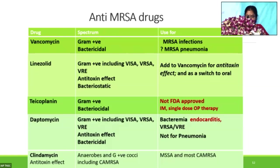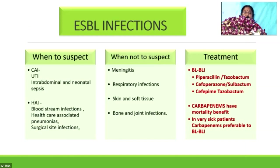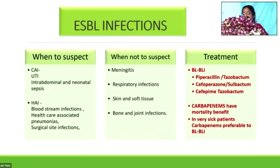ESBL infections are not uncommon — 40% to 50% of UTIs may be ESBL infections. Apart from UTI, intra-abdominal sepsis and neonatal sepsis, ESBL-producing organisms are very common, though we don't think in terms of ESBL in respiratory infections or meningitis. Treatment for ESBL infections includes BL-BLI inhibitors like piperacillin-tazobactam. Carbapenems are even preferable to BL-BLI combinations because they have a mortality benefit.